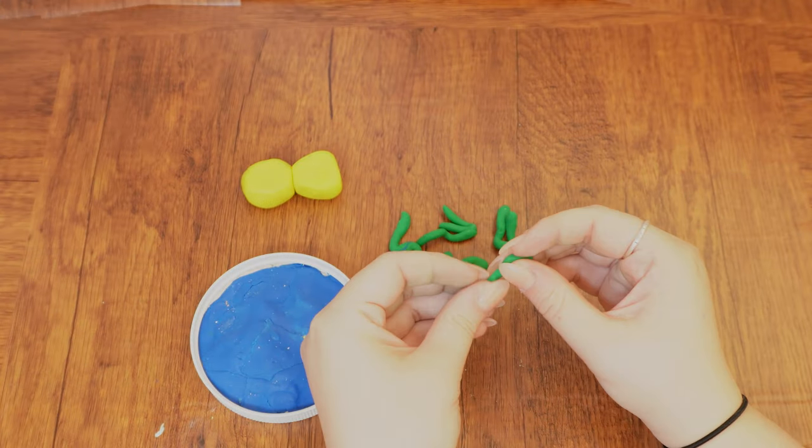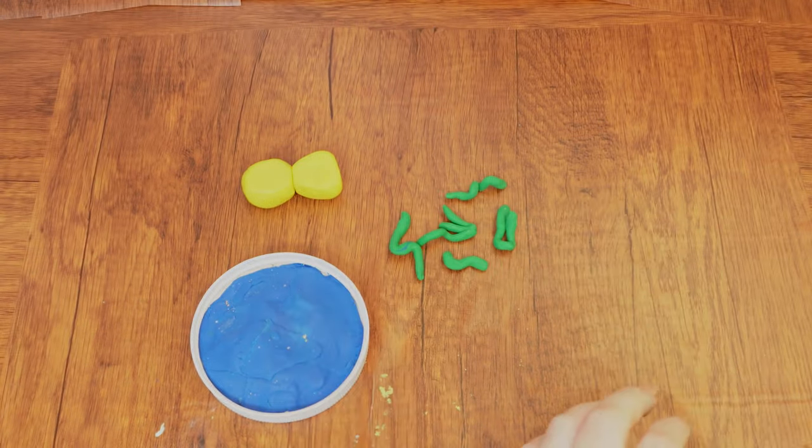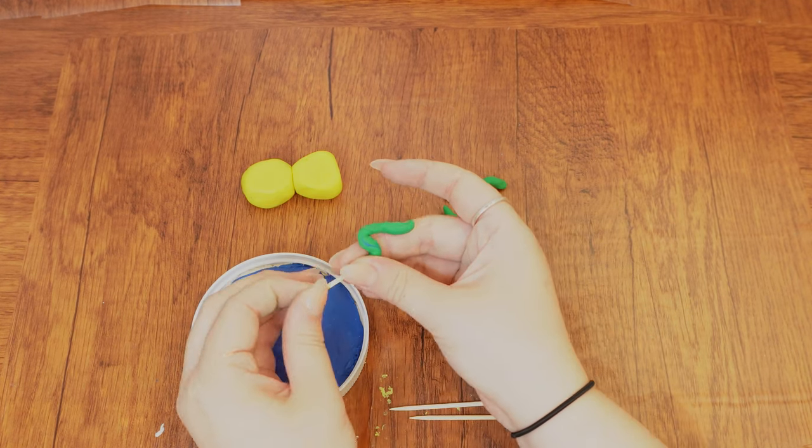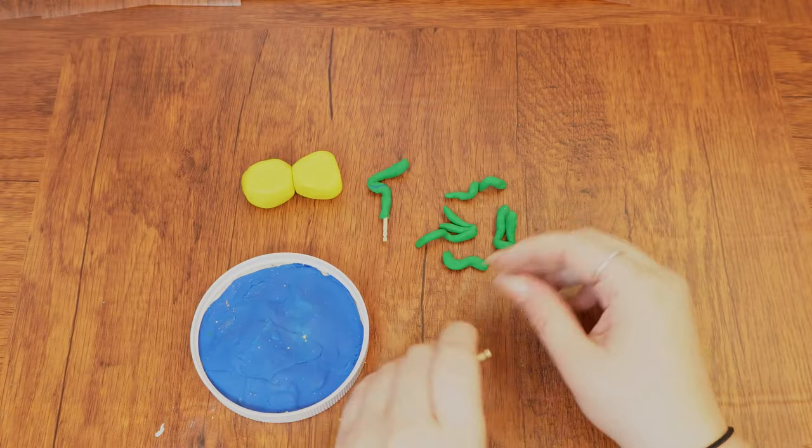Stick a short piece of toothpick through the length of each sea plant to lend it stability, leaving the end sticking out a bit. As you break up toothpicks into shorter segments, be careful not to get a splinter.